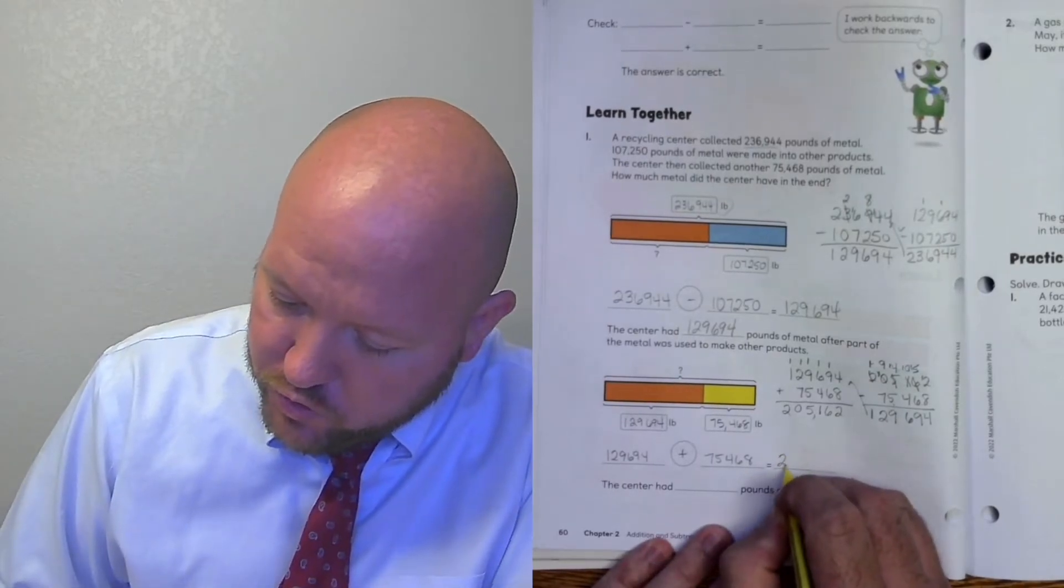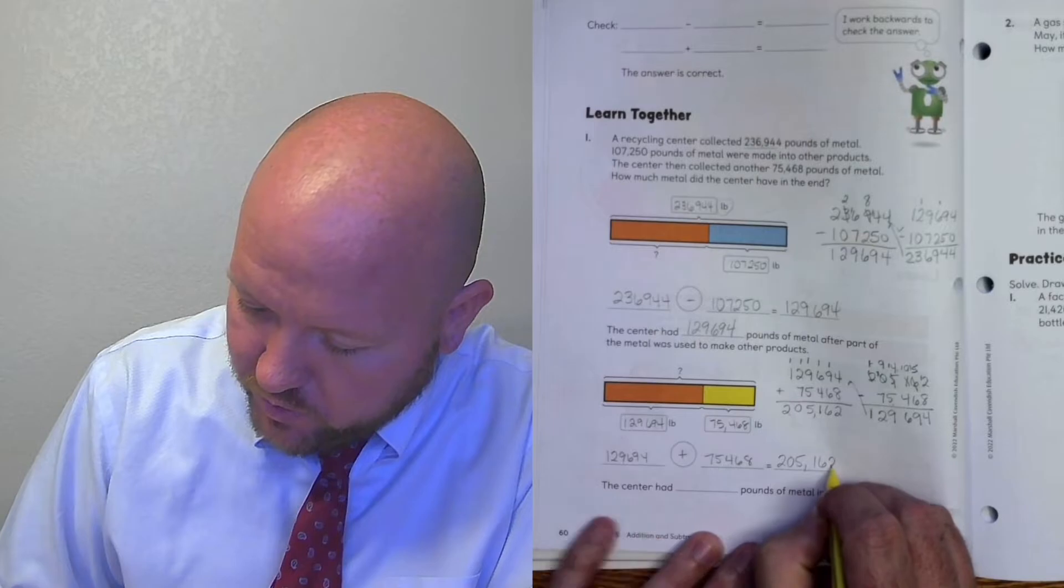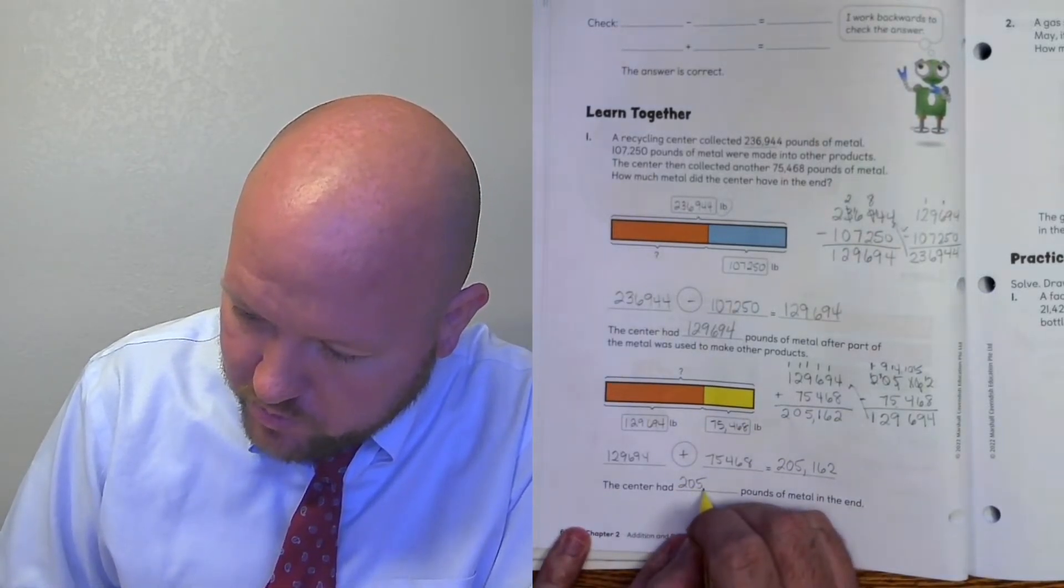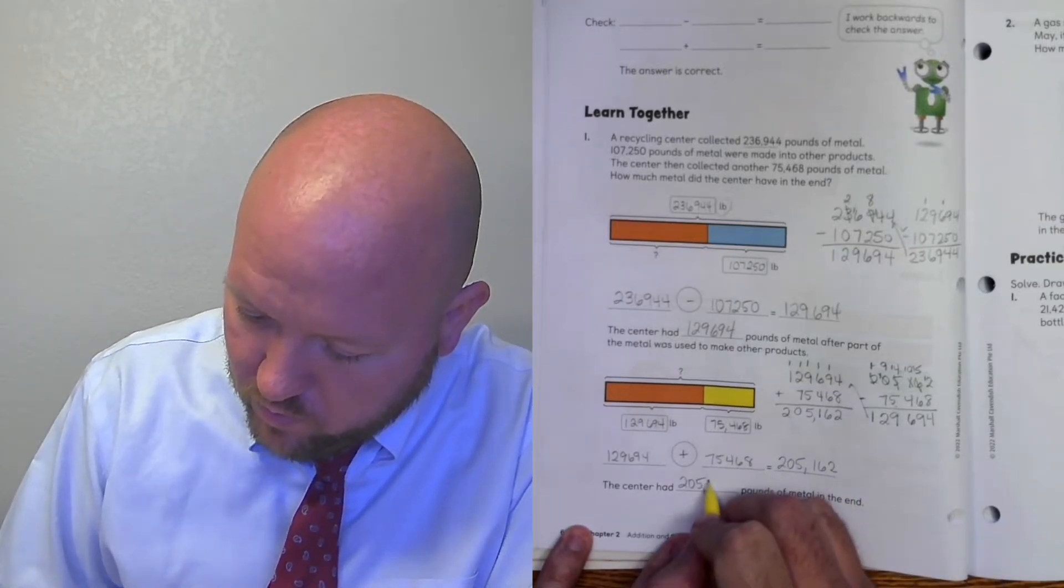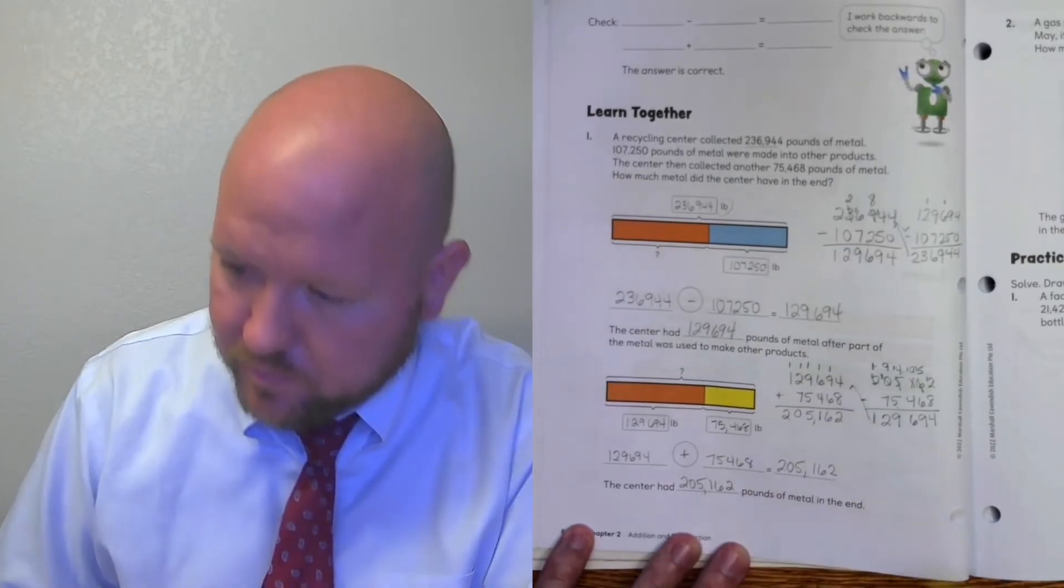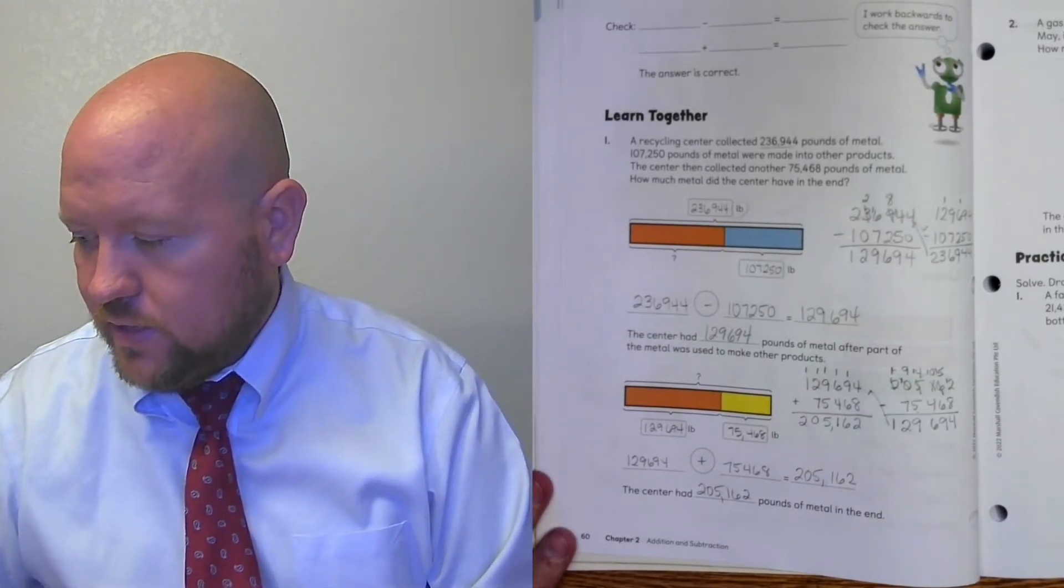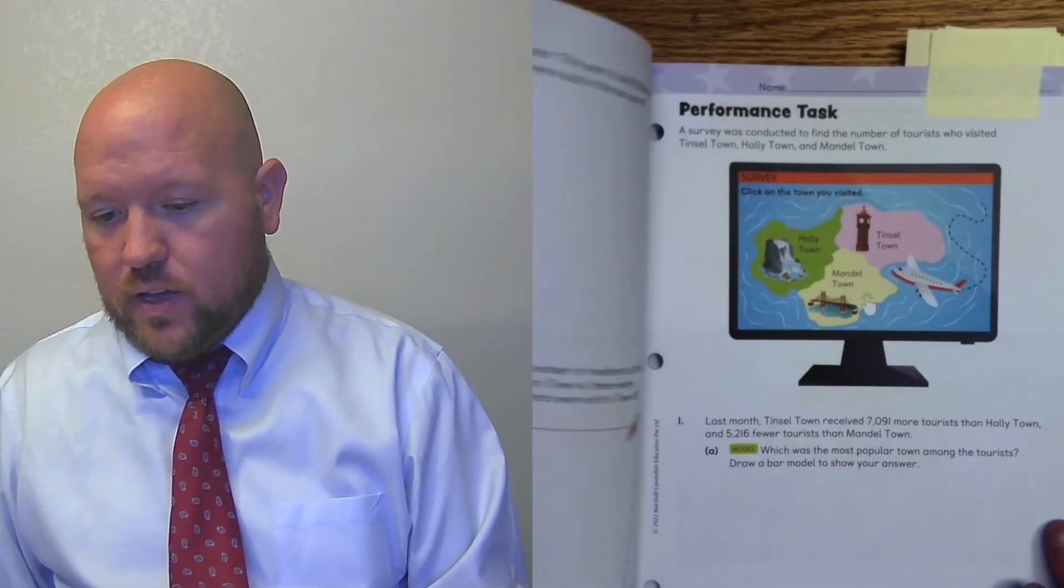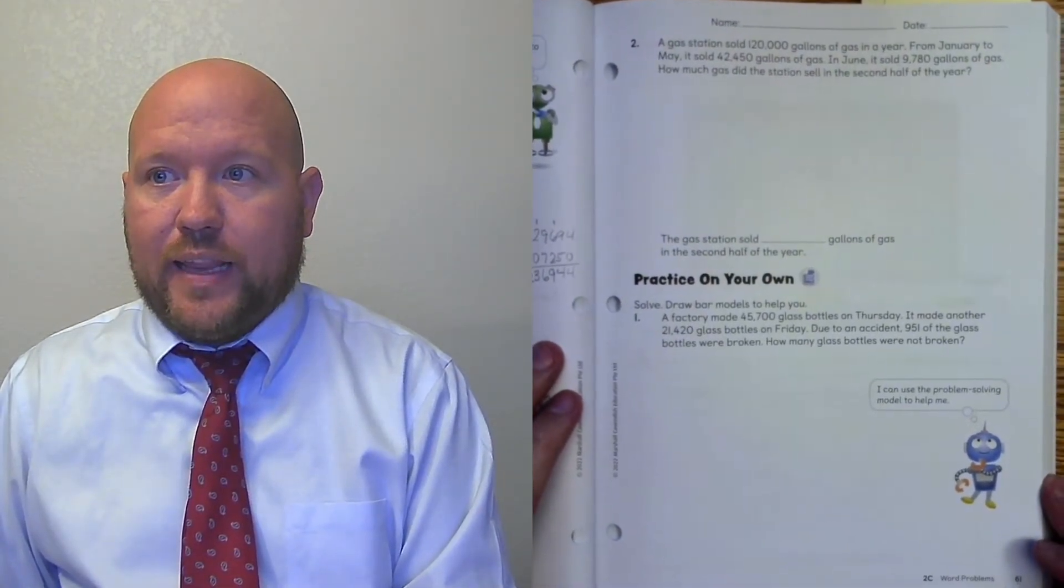Therefore, 205,162 is most likely the right answer. We can't be 100% sure, but we can be pretty confident. All right. Let's turn to page 61. And here, I'm going to go ahead and break this up into two lessons.